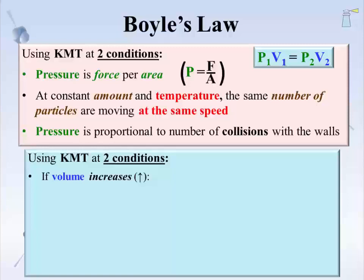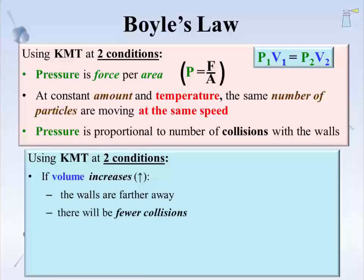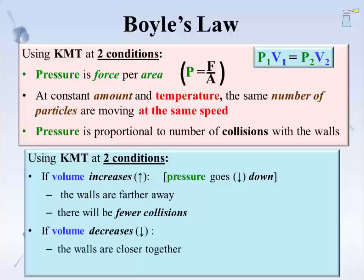If the volume of the container is increased, the walls of the container are further away from each other. The gas particles have longer distances to travel to strike the wall. That results in fewer collisions, which means less force on the walls, which means pressure goes down. Fewer collisions, lower force, less pressure. If, however, the volume of the container is decreased, the walls are closer together. The gas particles have a shorter distance to travel before striking the wall. That results in more collisions, which means more force on the walls, which means the pressure goes up.